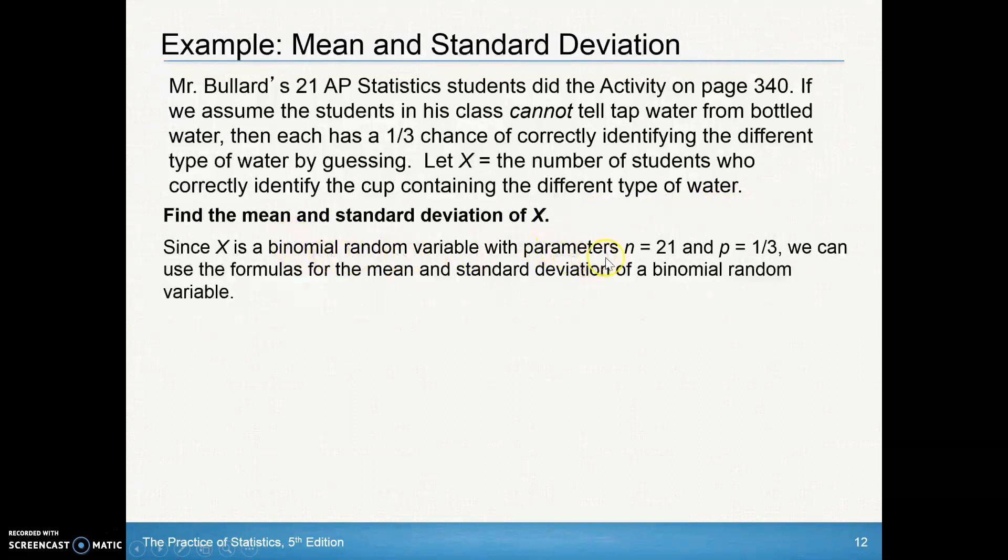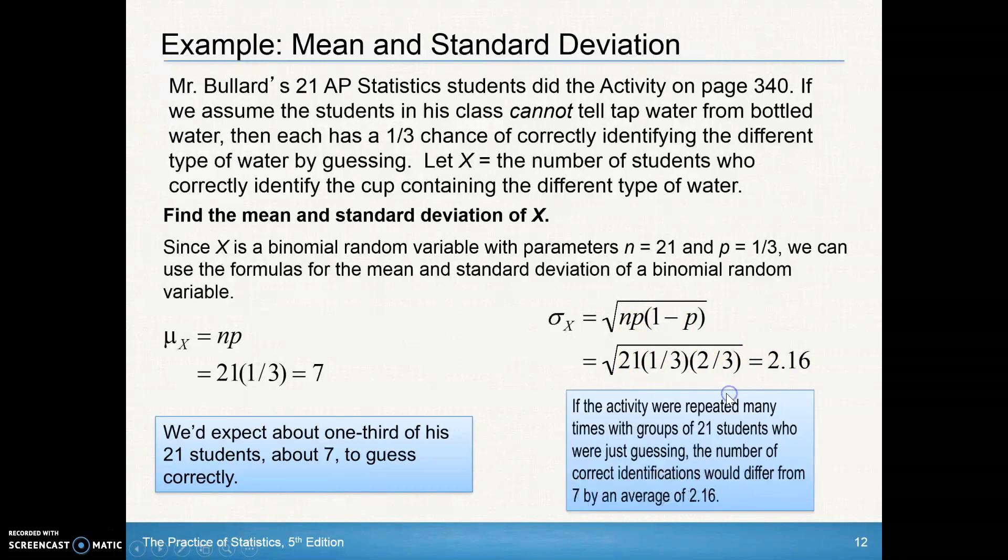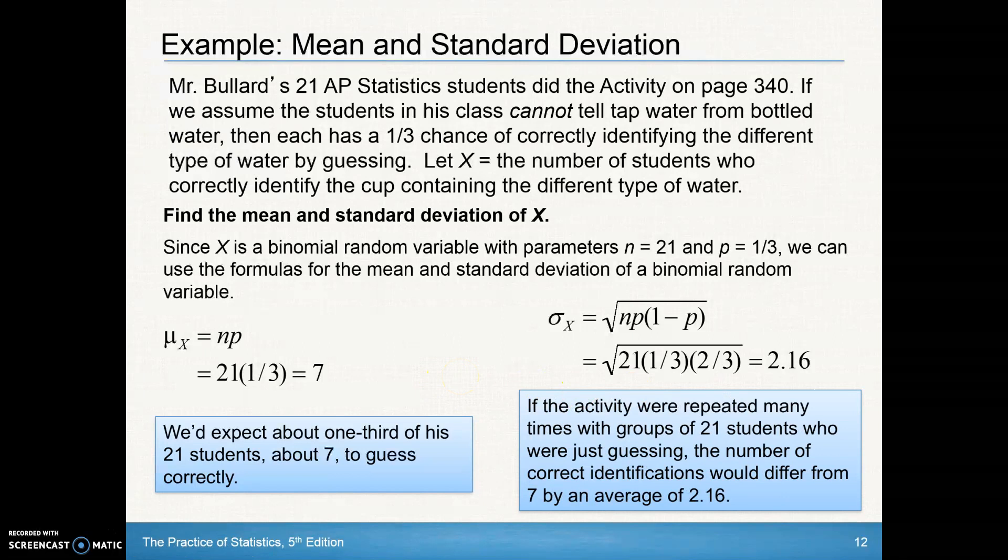I could calculate all those probabilities for the random variable from 0 to 21, and that's a heck of a lot of work. We can utilize the shortcut because n is 21, there's 21 students, and the probability of success of guessing correctly the cup containing the different types of water. The mean is simply n times p, or 21 times a third, so it's 7. On average, it should have 7 students able to guess what kind of water is in the cup. The standard deviation, 21 times one-third times two-thirds, and then square rooting that is 2.16. If the activity were repeated many times with groups of 21 students who are just guessing, the number of correct identifications would differ from 7 by, on average, about 2.16.